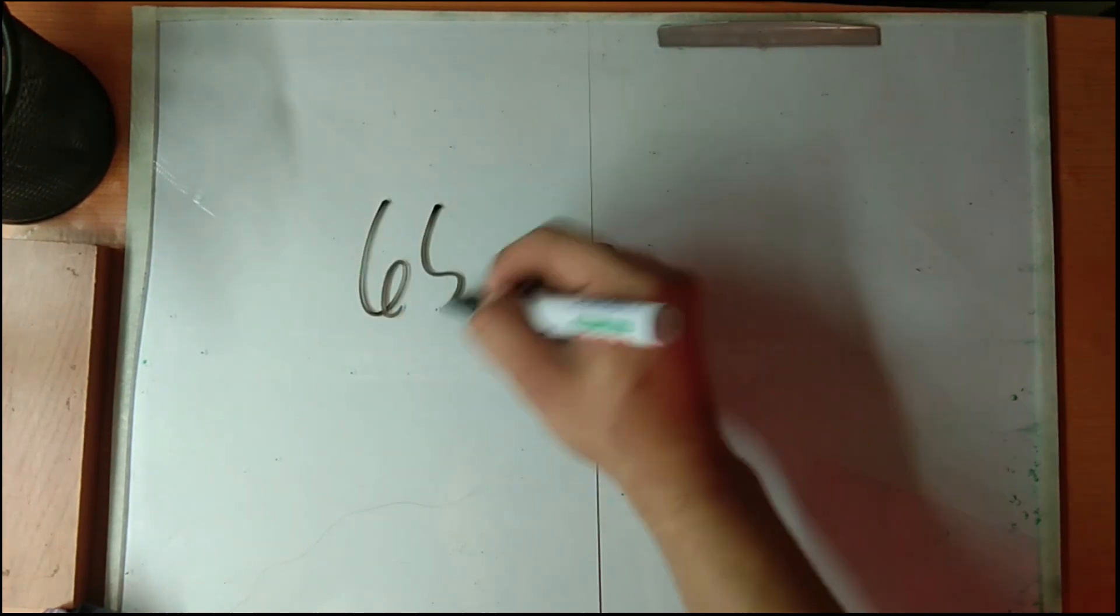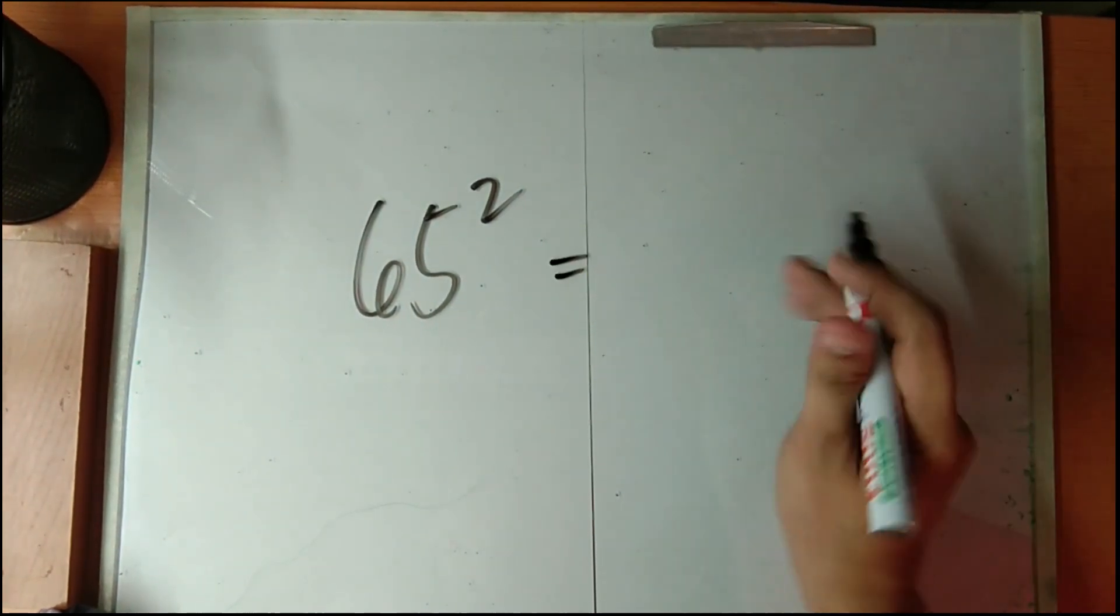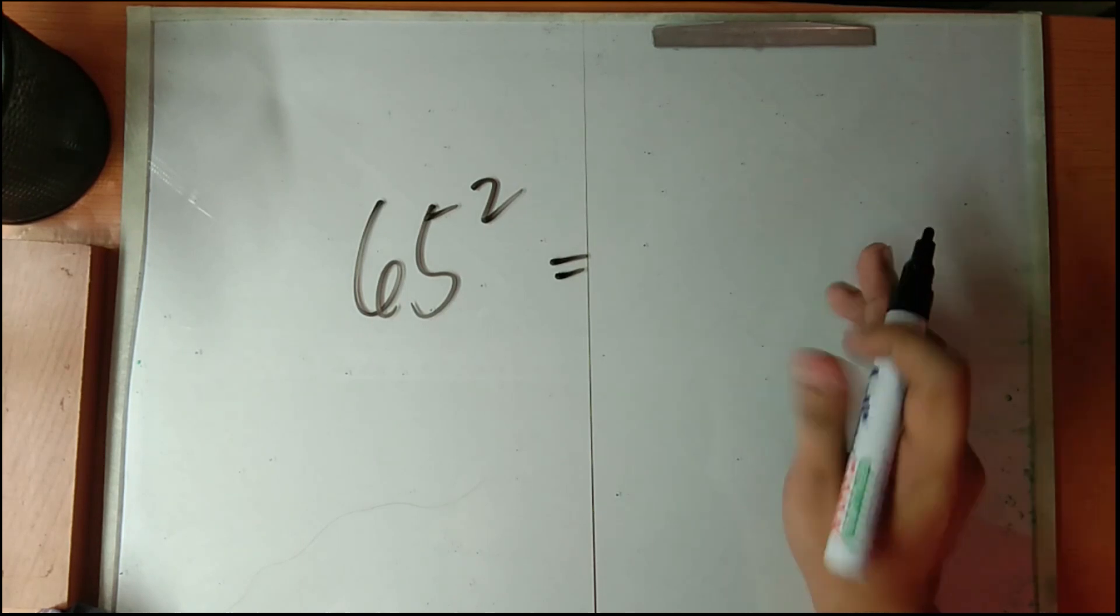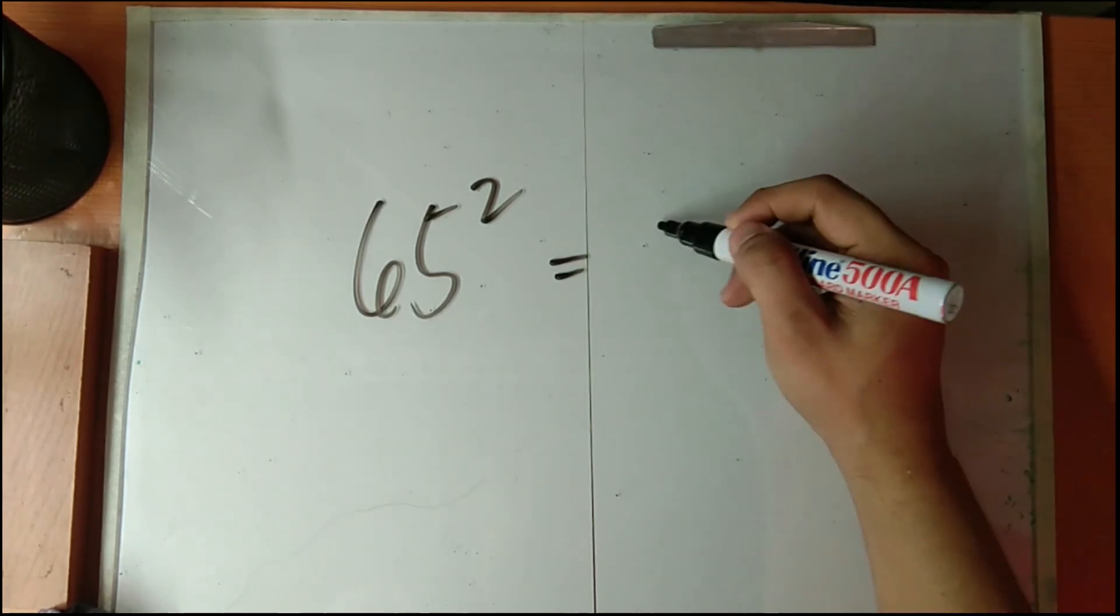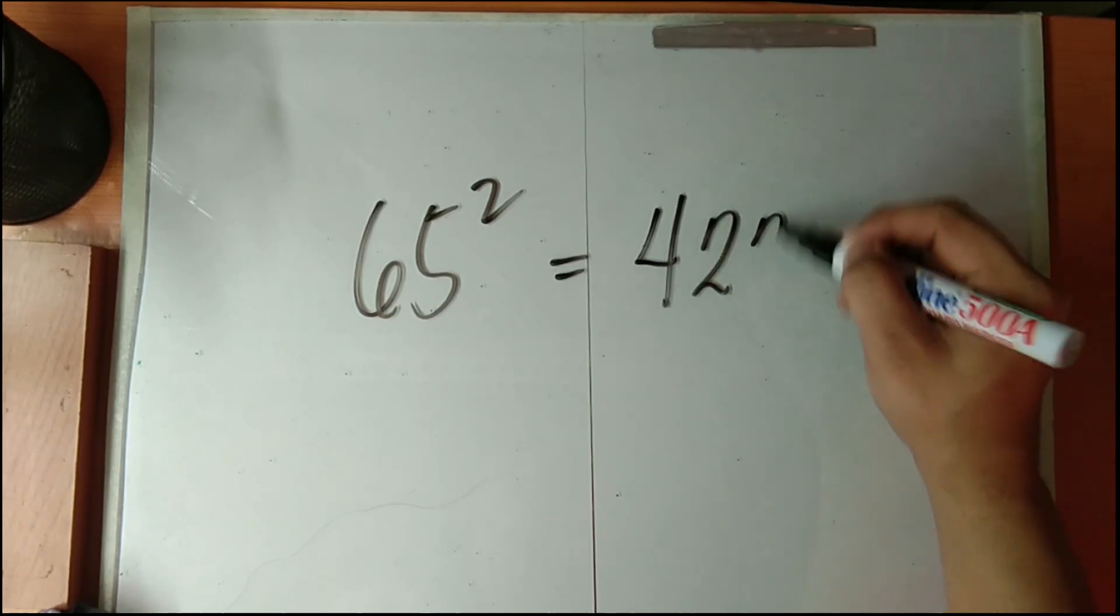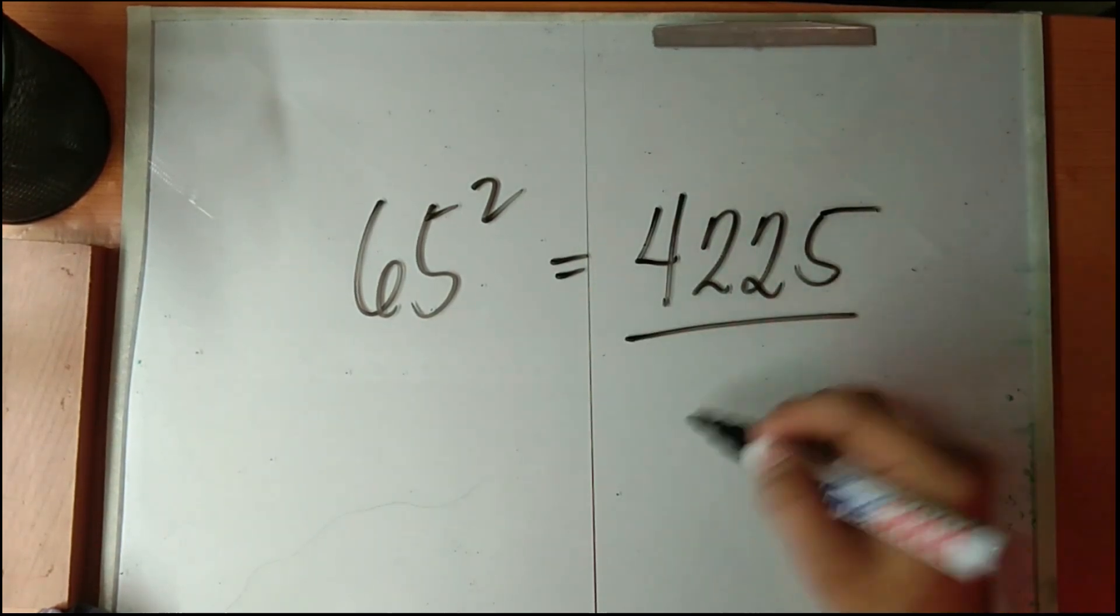For the last example, try this. What is the square of 65? Now if your answer is 4,225, then you got it right.